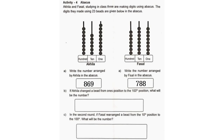B. If Akila changed a bead from the 1's position to the 100th position, what will be the number? Answer: 968. C. In the second round, if Faisal rearranged a bead from the 10th position to the 100th, what will be the number? Answer: 878.